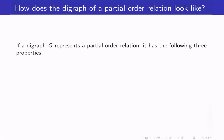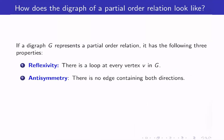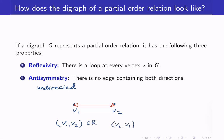What if we have a partial order relation? How will the digraph look like? First, it has to be reflexive — for every vertex v, we will always have a loop, though most of the time I will no longer draw it. Next, anti-symmetry: there is no edge containing both directions. If you have a partial order relation, it cannot have edges going both ways, because if V1→V2 and V2→V1 are both in R, anti-symmetry requires that V1 = V2. So we should always have one direction only.